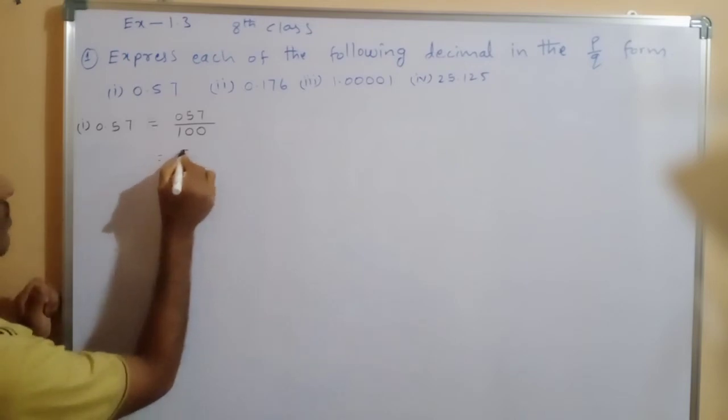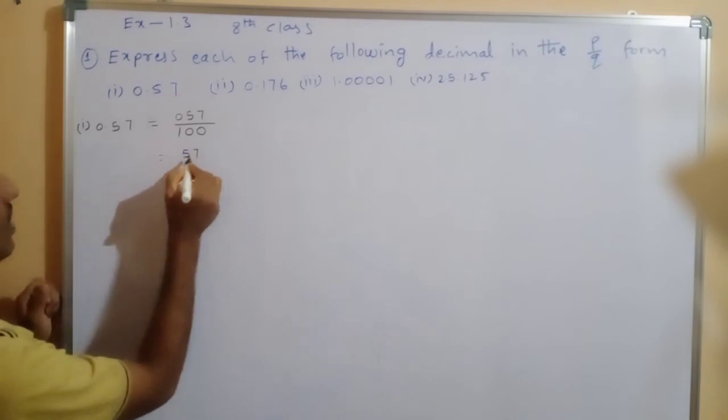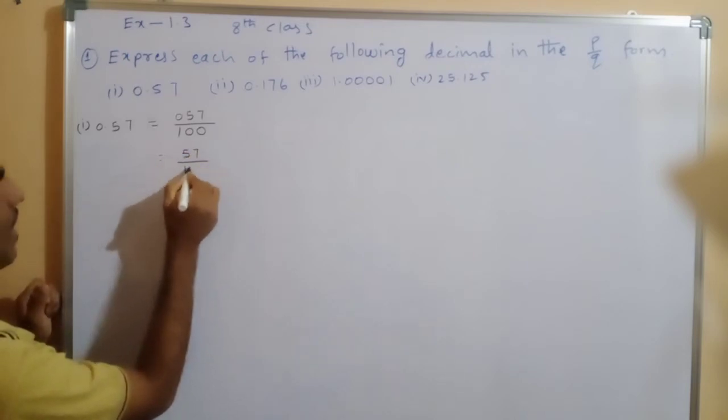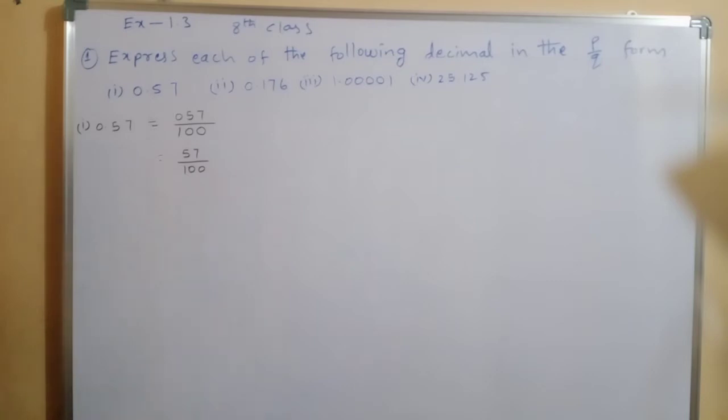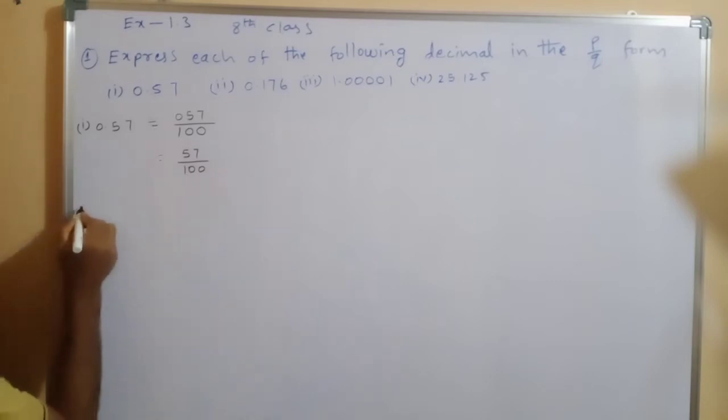So the answer is 57 divided by 100. Now move to the second sum.